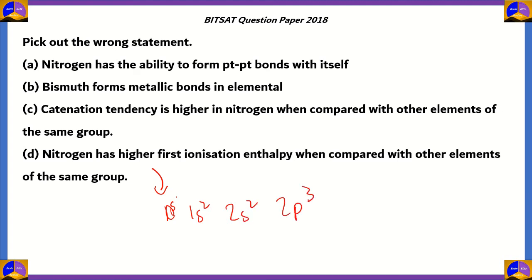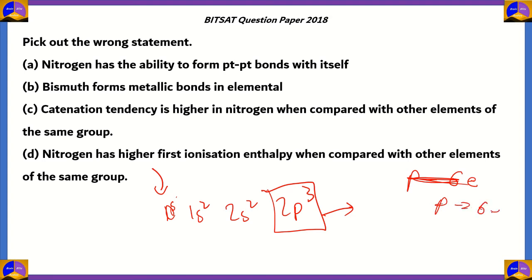The electronic configuration of nitrogen is 1s², 2s², 2p³. The valence shell is 2p, which has three electrons. The p subshell holds a maximum of six electrons, so with three electrons it is half-filled.